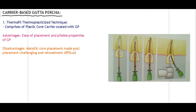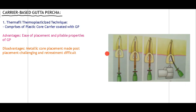Carrier-based gutta-percha (Thermafil) technique: a plastic core carrier material coated with GP is used. The carrier is placed in the canal and cut off at the orifice using a high-speed handpiece. Advantages include easy placement and good pliable properties of GP. Disadvantages include difficulty placing a post after treatment due to the metallic core, and retreatment is also more difficult. This technique is therefore less frequently used compared to other techniques.